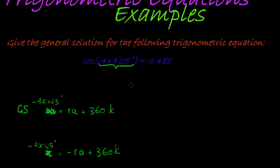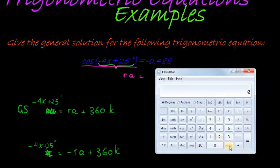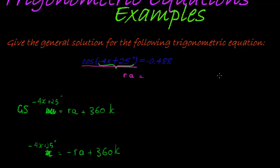The next step, or the first thing actually that we want, is a trig ratio equal to a constant, and that we already have. Which means our reference angle is simply taking this value, negative 0.488, the inverse cos of that, 119.21. That's our reference angle.